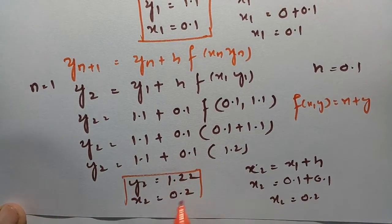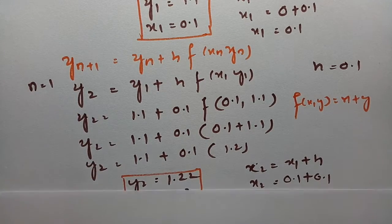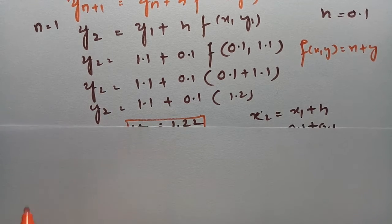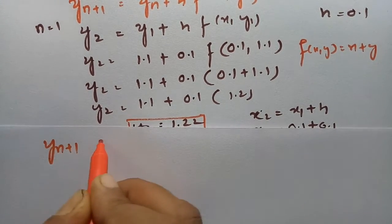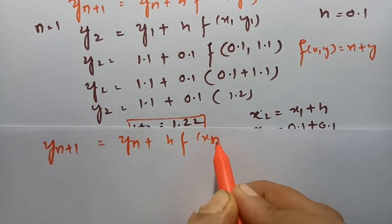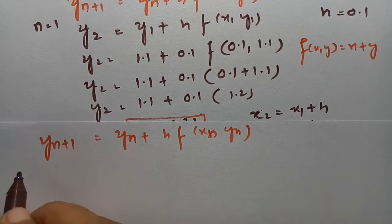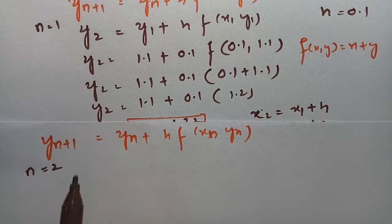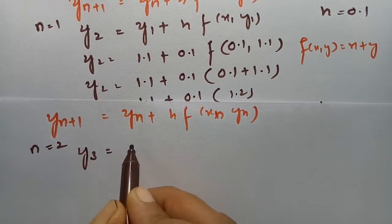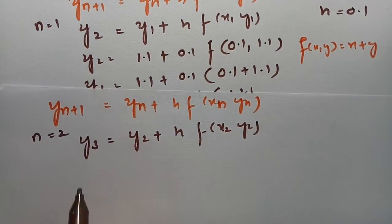After getting x_2 and y_2, we need to find y_3. Using the same formula y(n+1) = y_n + h · f(x_n, y_n), keeping n = 2: y_3 = y_2 + h · f(x_2, y_2).